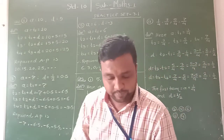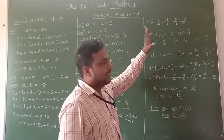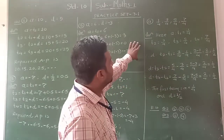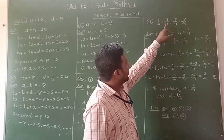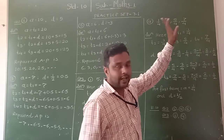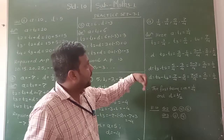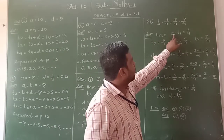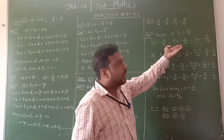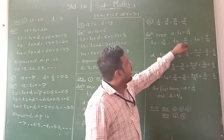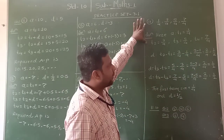We see one more example — question number 4, where the arithmetic progression numbers are given in fraction form. The arithmetic progression is: 1 upon 4, 3 upon 4, 5 upon 4, 7 upon 4, and so on. We represent the terms: T1 is equal to 1 upon 4, T2 is equal to 3 upon 4, T3 is equal to 5 upon 4, and T4 is equal to 7 upon 4.